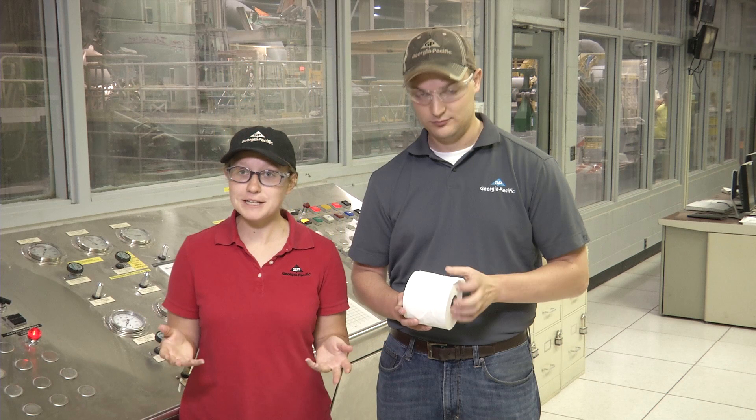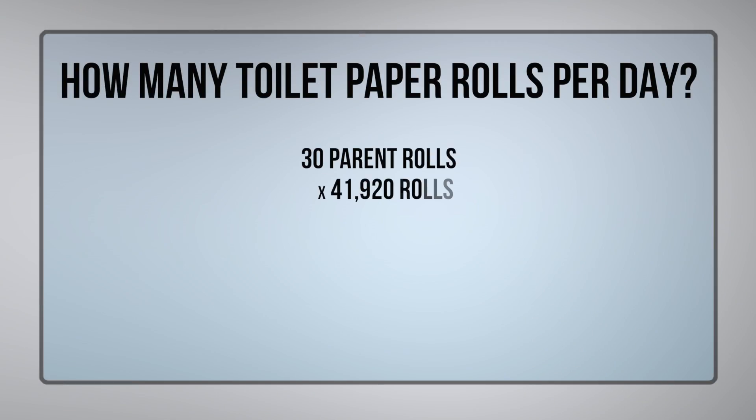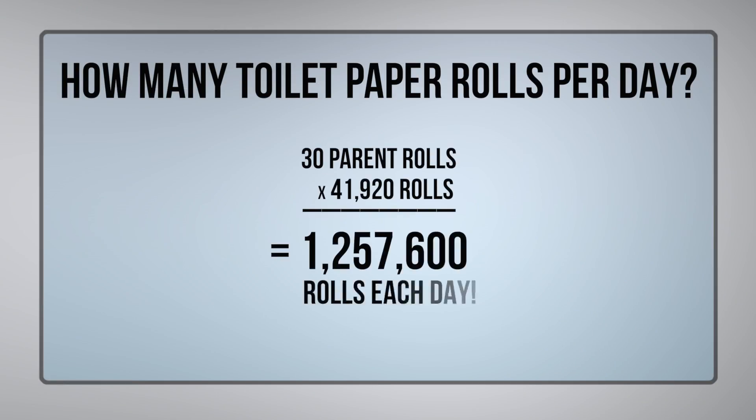To find the answer, we need to multiply the number of parent rolls made each day by the number of toilet paper rolls made per parent roll. This comes out to 1,257,600 toilet paper rolls. Now that's a lot of toilet paper!